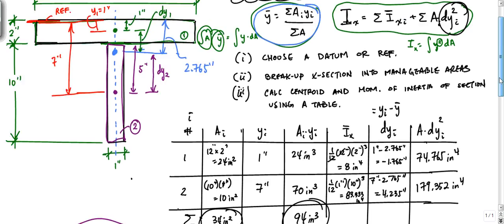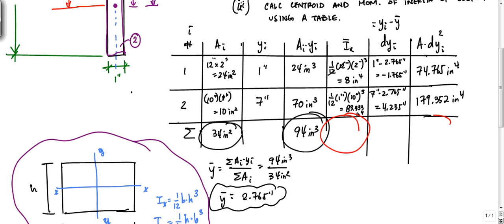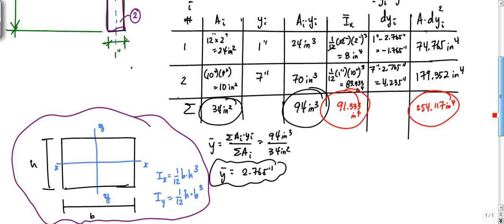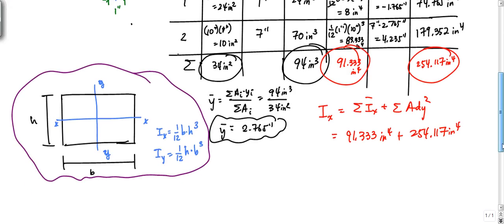To apply the parallel axis theorem, it's the sum of the I's about themselves plus the sum of A·d_y squareds. Summing the I_x-bar column: 83.333 plus 8 gives 91.333 inches to the 4th. Summing the A·d_y² column gives 254.117 inches to the 4th. The moment of inertia about the horizontal centroidal axis is I_x = 91.333 + 254.117 = 345.45 inches to the 4th.